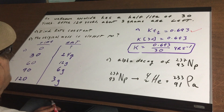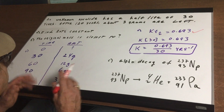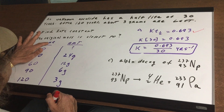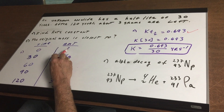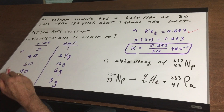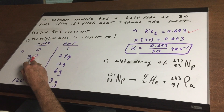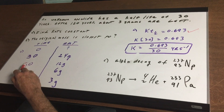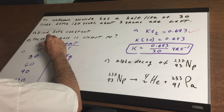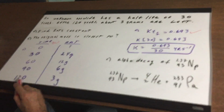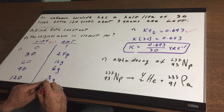What's the original amount closest to? To avoid using any logarithmic equation, I like to set up a little chart of time and amount. At time equals 0, we don't know the original amount, so I put a question mark. The half-life is 30 years and we need to go to 120, so we fill in the chart: 30, 60, 90, and 120 years. At 120 years we have 3 grams left.